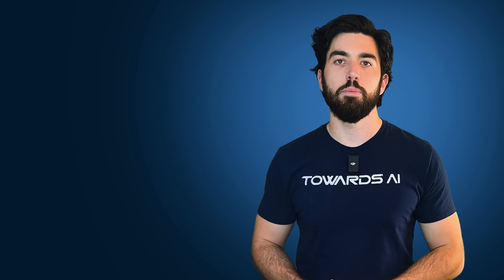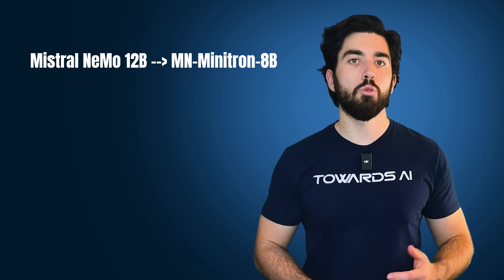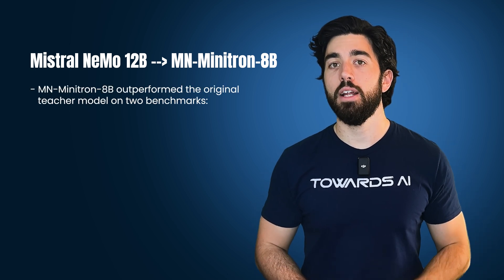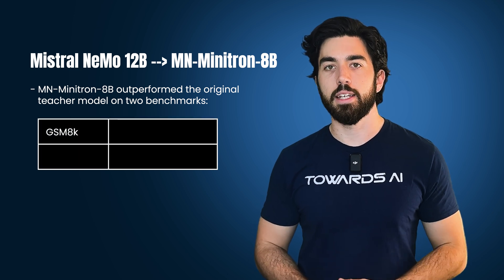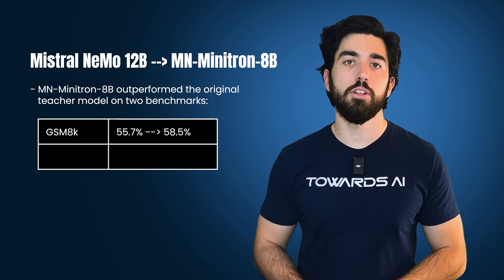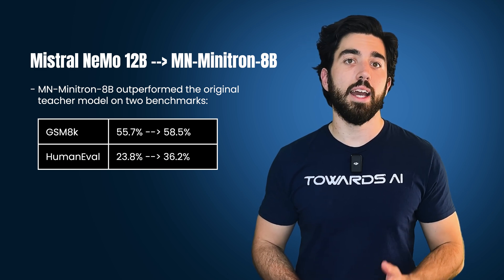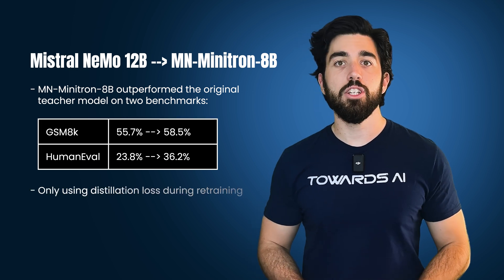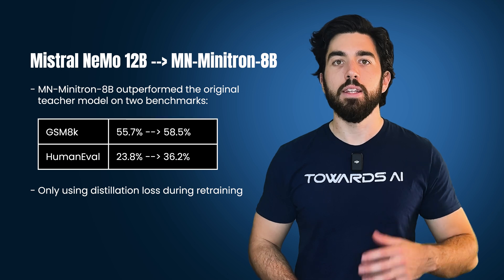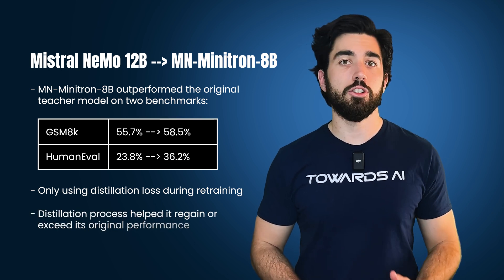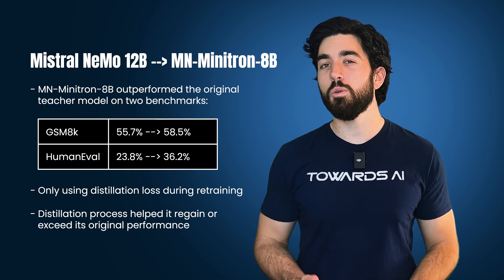For the specific examples: when they compressed Mistral Nemo 12B down to an 8B parameter model, the smaller compressed model actually outperformed the original teacher model on two benchmarks. On GSM 8K, the score jumped from 55.7% to 58.5%, and on HumanEval it went up from 23.8% to 36.2%. They achieved this by only using distillation loss during retraining. So even though they were pruning and cutting down the model, the distillation process helped it regain and in some cases exceed its original performance.